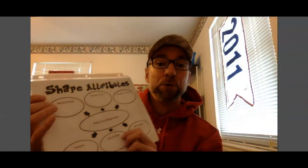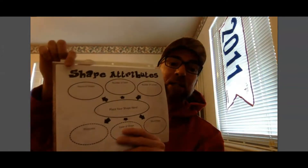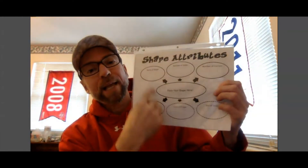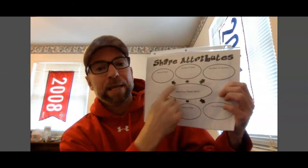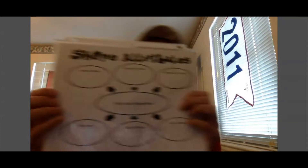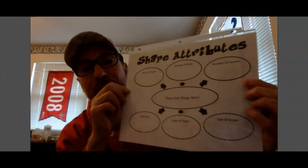Hey there, first grade, and welcome back to another remote learning math lesson with Mr. Enzi. Today, we're going to take a look at some shapes and what makes each shape special. For today's lesson, you are going to need a brand new math mat called shape attributes, and it almost looks like a web. It starts with a big oval in the middle, and then some other ovals shoot out. Look for that shape attributes math mat.